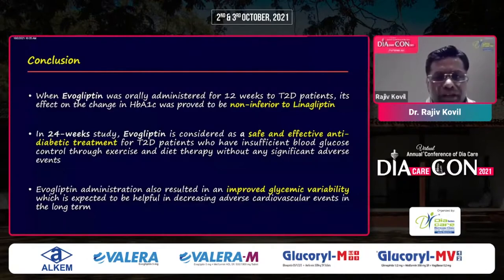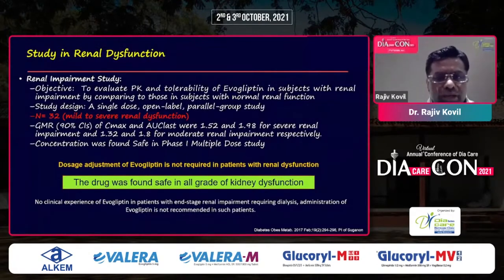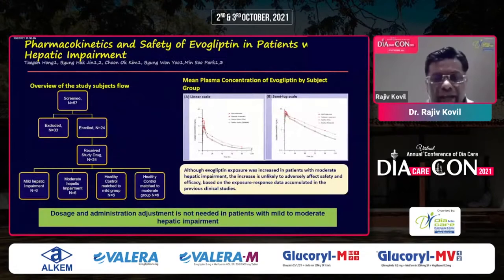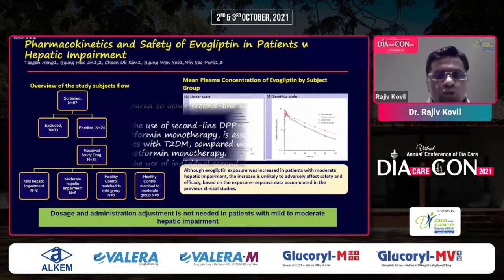Evogliptin also has a study done in mild to moderate renal dysfunction. The number of patients is low — only 30 — but it still provides proof of concept that it can be used in patients with chronic kidney disease as well as in patients with hepatic impairment, with no extra drug exposure that would have any deleterious side effects.